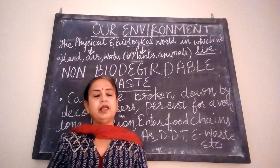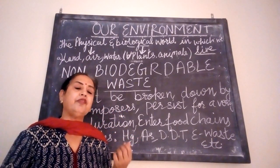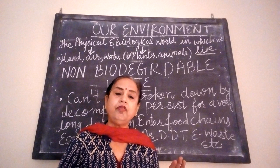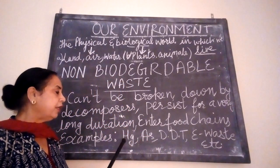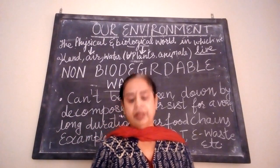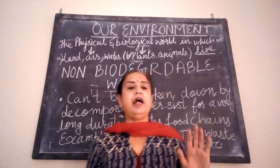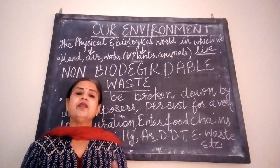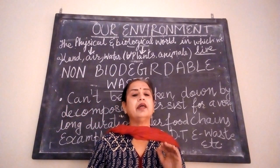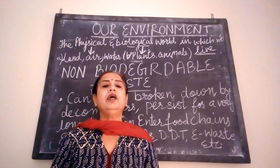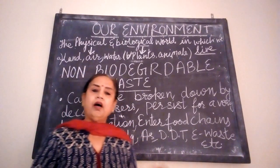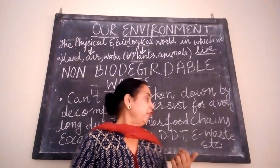The threat to life is so serious that DDT has entered the food chain, and even mother's milk is not free of DDT. Heavy metals like mercury and arsenic, and pesticides like DDT, and e-waste are examples of non-biodegradable waste. Many countries have already banned the use of DDT, as it is a very harmful chemical which cannot be biodegraded. There are many other non-biodegradable pesticides, as well as glass and rubber, which are other forms of non-biodegradable waste.